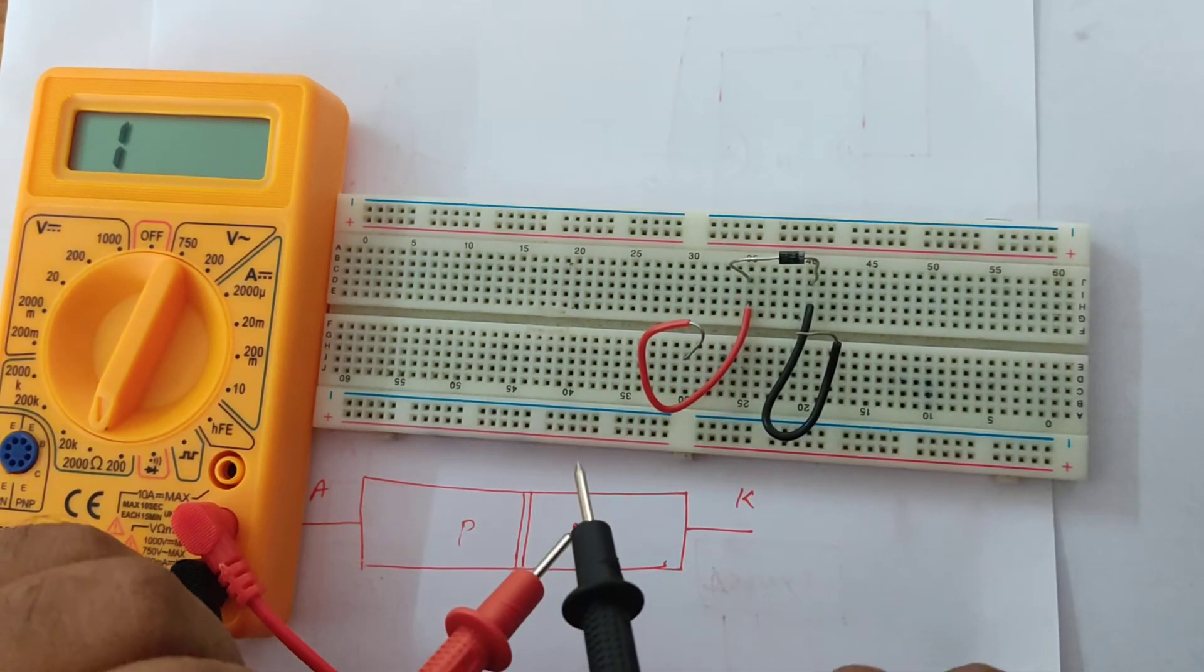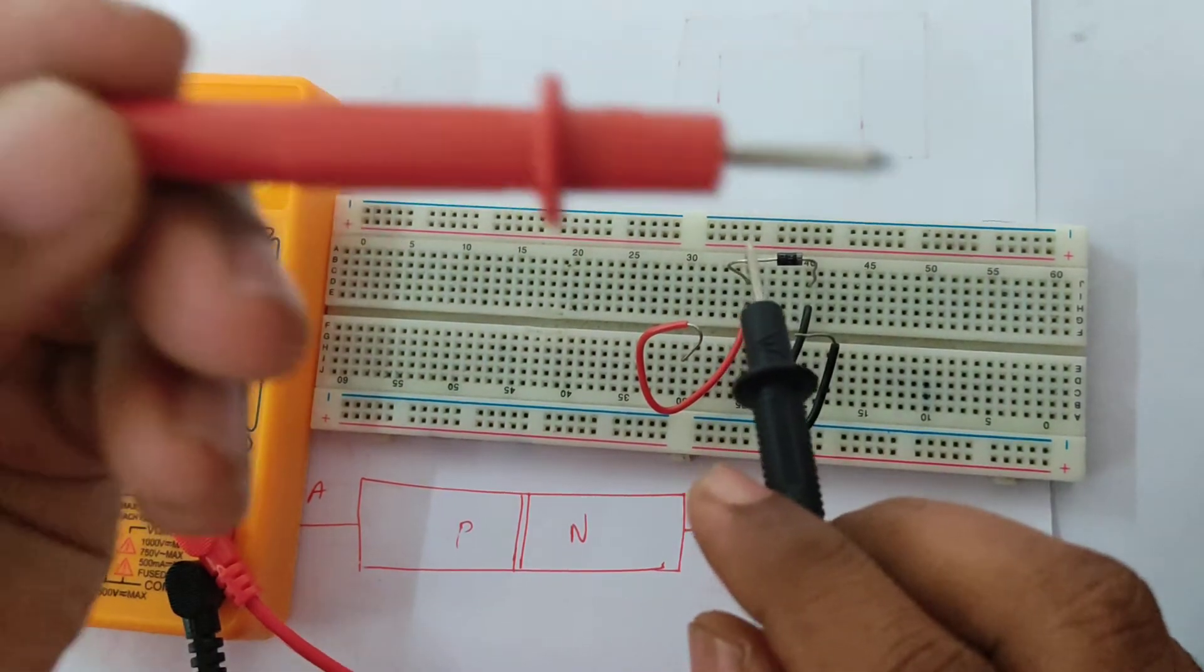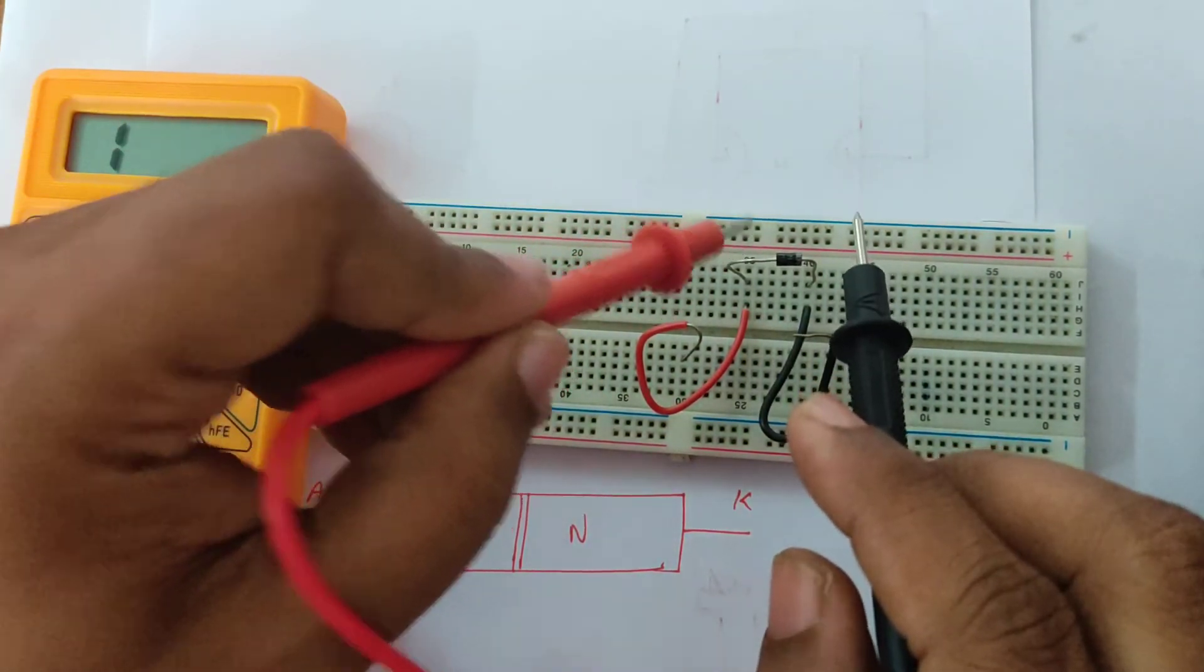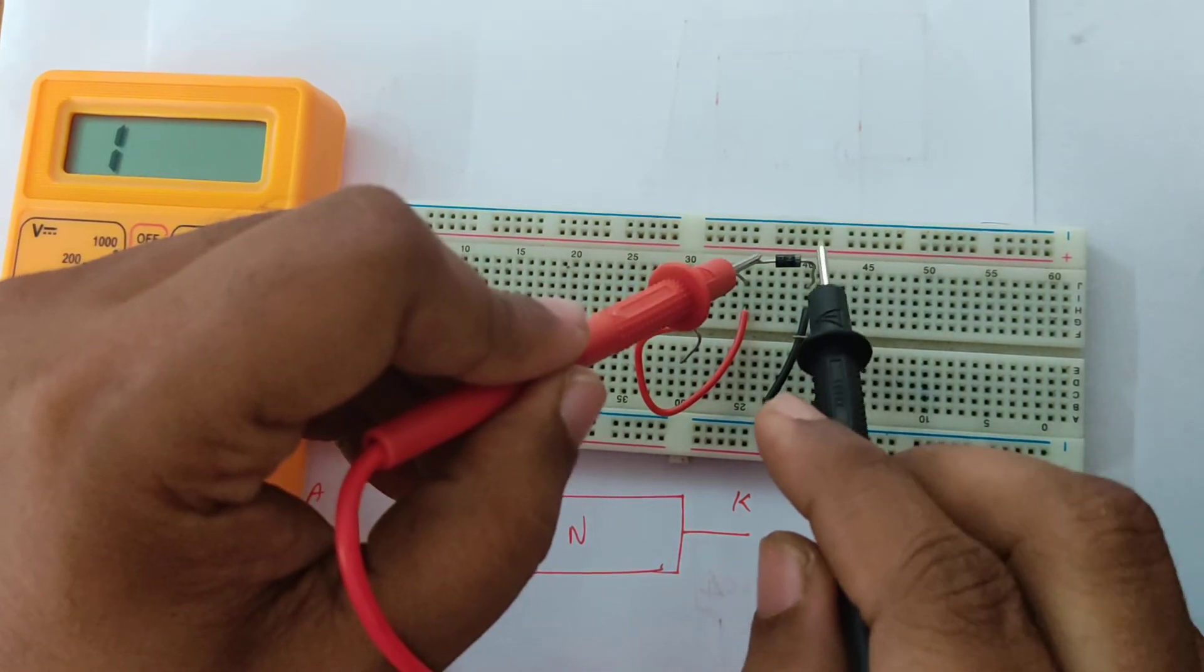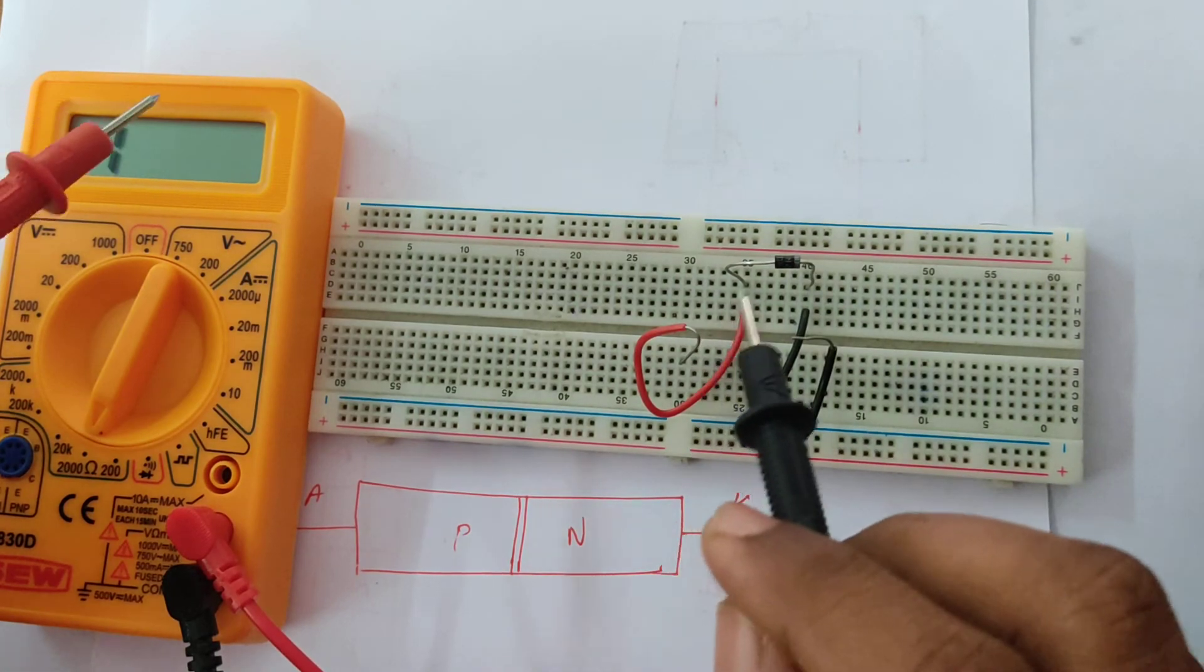Flowing in the forward biasing condition, that is when the red probe is connected to the anode and the black probe is connected to the cathode. You get a very minimum resistance of 580.